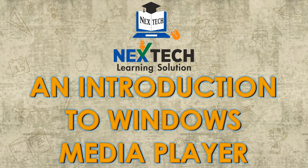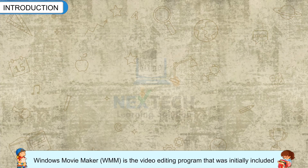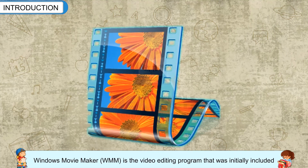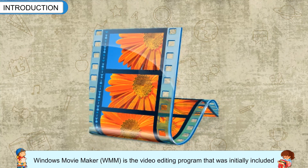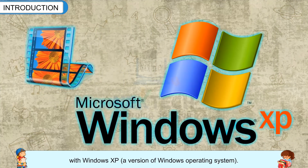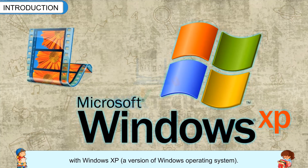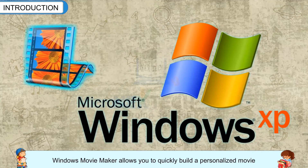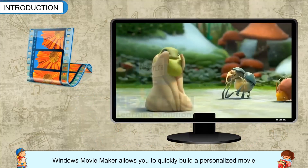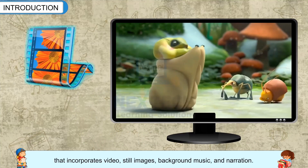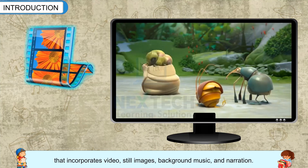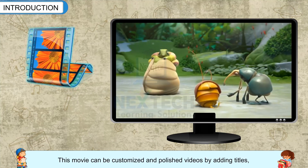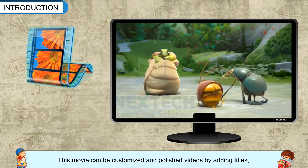Introduction to Windows Movie Maker. Windows Movie Maker (WMM) is the video editing program that was initially included with Windows XP, a version of Windows operating system. Windows Movie Maker allows you to quickly build a personalized movie that incorporates video, still images, background music and narration. This movie can be customized and polished by adding titles,